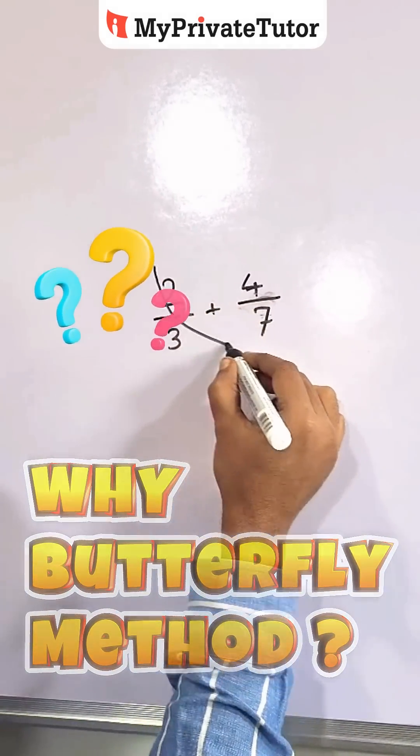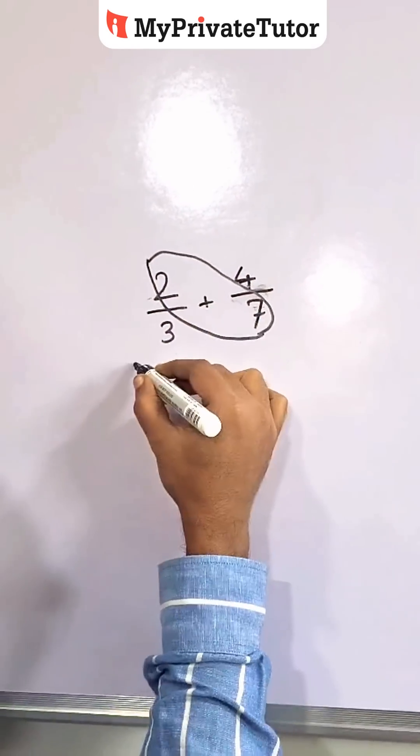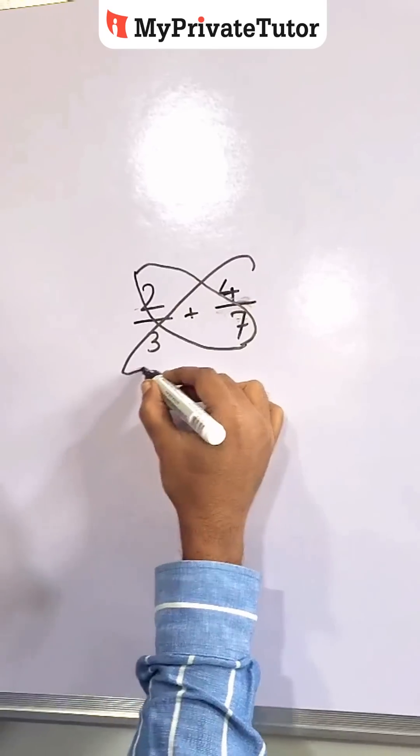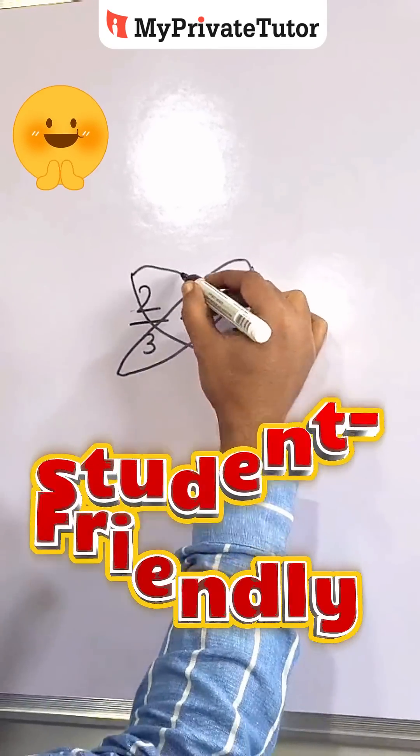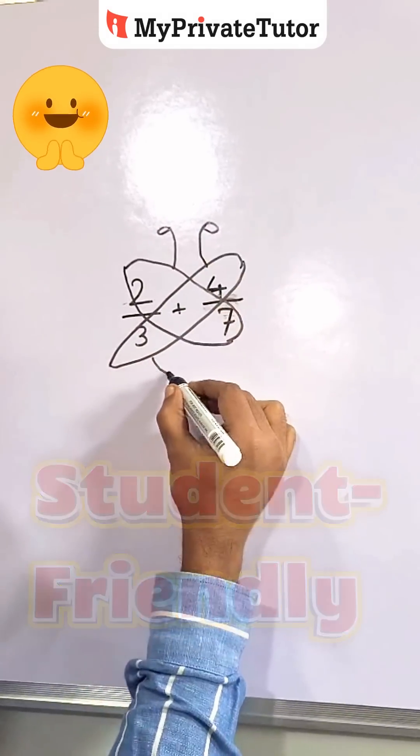Now draw the wings of the butterfly first. Then antenna. Then the body.